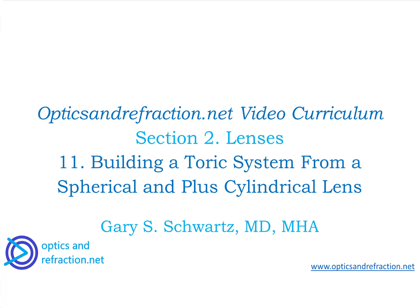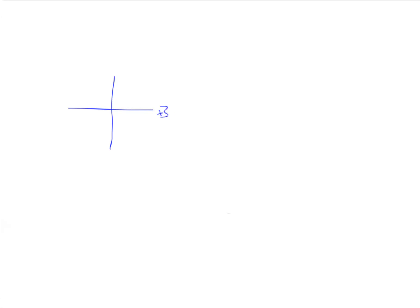In the last couple of lectures, I presented this concept of a Toric system, where you have plus 3 here and plus 5 here. This concept is we don't have plano on one of the key axes, and the main axes that are 90 degrees apart from each other have different numbers, plus 3 and plus 5. Halfway in between would be plus 4. And we drew it like this on a power cross.